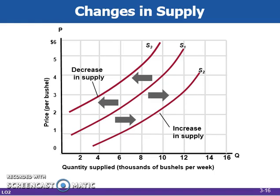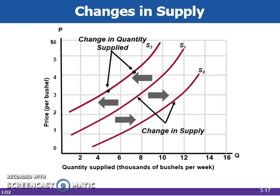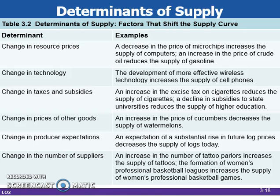A change in one or more of the determinants of supply causes a change in supply. An increase in supply is shown as a rightward shift of the supply curve from S1 to S2. A decrease in supply is depicted as a leftward shift of the curve, from S1 to S3. These changes in supply are to be distinguished from a change in quantity supplied, which is caused by a change in the price of the product and is shown by a movement from one point to another point on a fixed supply curve.